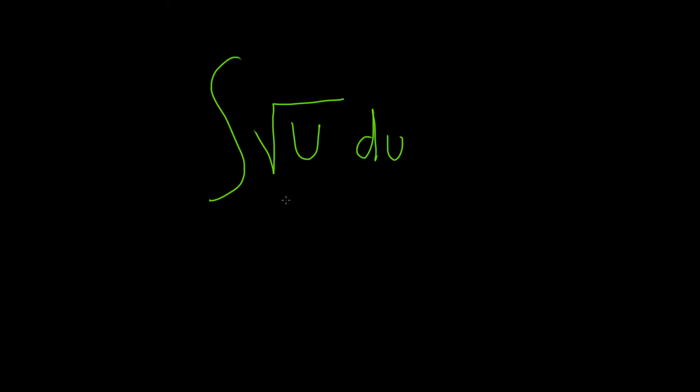The first thing we want to do is rewrite this in a way that will allow us to actually do the problem. We can handle variables to a power using what's called the power rule. So we need to write the square root as something to a power.